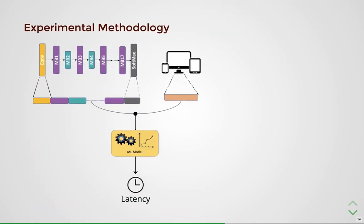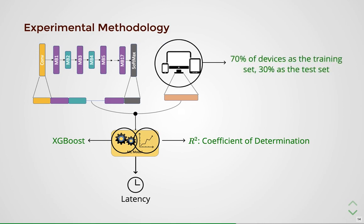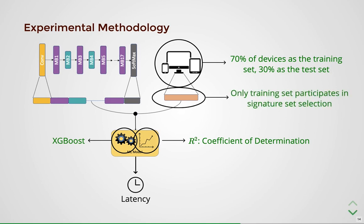We now describe our experimental methodology. We use XGBoost, a state-of-the-art machine learning model, as the cost model of choice. We use R-squared, also known as the coefficient of determination, as the metric to evaluate the goodness of the learned cost model. The devices are split into train and test sets corresponding to 70% and 30% of all devices respectively. Each device in both sets contains latencies of all 118 networks. Only the training set participates in the selection of the signature set, and 10 is chosen as the number of networks in the signature set for most experiments.